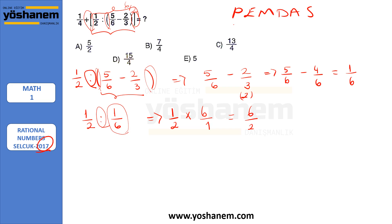My question is now 1 over 4 plus 6 over 2. We need common denominators to add them together, so let's multiply 6 over 2 by 2 to get 4, giving 1 over 4 plus 12 over 4. That gives 13 over 4 as my answer.